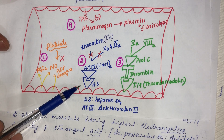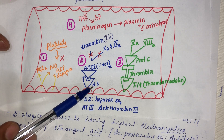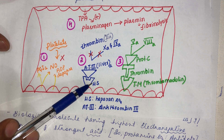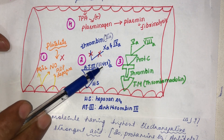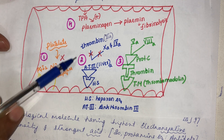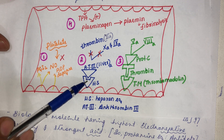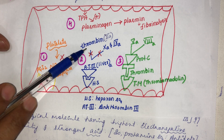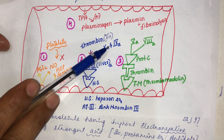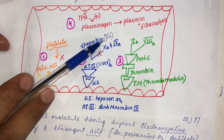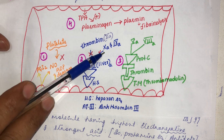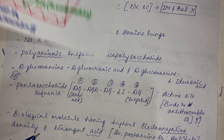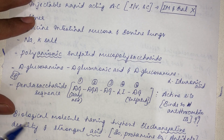In a normal intact blood vessel, the endothelium expresses heparin sulfate. The circulating antithrombin-3, produced by the liver, binds to this heparin sulfate and gets activated. Activated antithrombin-3 cleaves thrombin (factor 2a) and preferably factor 10a and 9a — this is how clotting is normally prevented in an intact vessel.